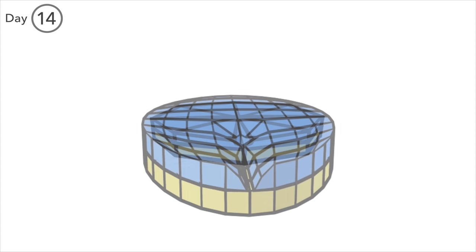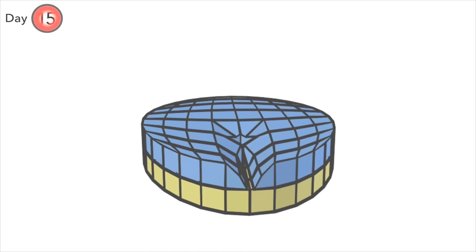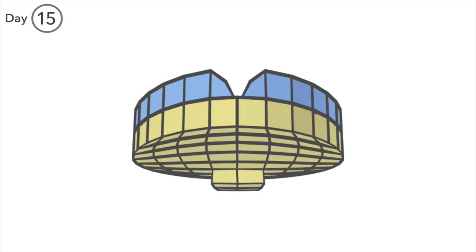We'll bring in a slightly more detailed version of the bilaminar disc now. Day 15. At the cranial end of the embryo, there's a patch of columnar cells, known as the procordal plate.